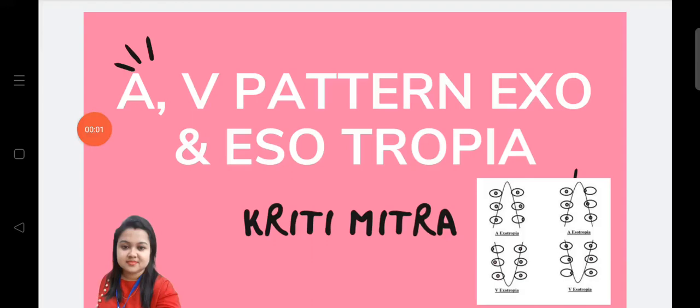Today we will be discussing A and V pattern exotropia and esotropia. This pattern squint is a type of paralytic strabismus or paralytic squint where the amount of deviation is not the same in all the cardinal points of gaze.